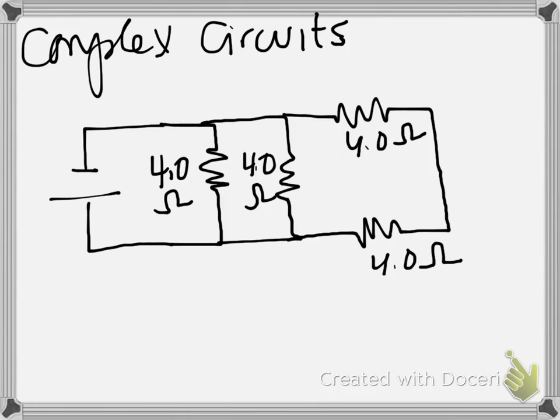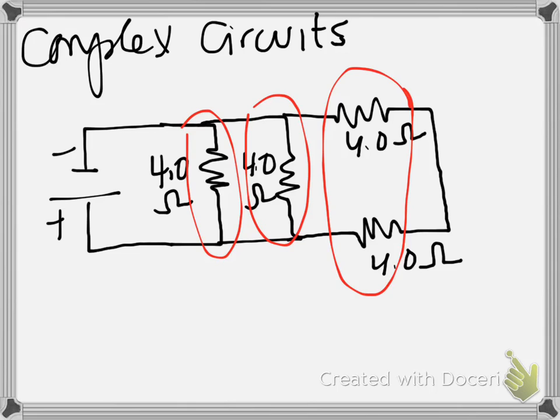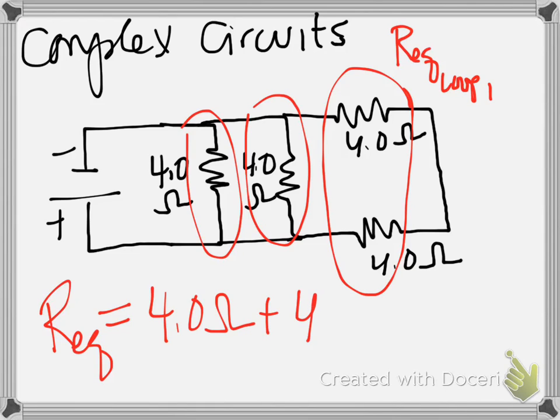Now we have a circuit in which we have resistors both in series and in parallel. So we have to figure out the equivalent resistance of the whole circuit. And we do this by breaking it into pieces first. So we know that if we look at these first two, they are in parallel with one another, but they're also in parallel with this whole loop on the circuit. So what we're going to do is first figure out the equivalent resistance of these two, which are in series. So we're going to call this equivalent resistance loop one or something. So that first equivalent resistance is just equal to 4.0 ohms plus 4.0 ohms or 8.0 ohms. That's pretty easy.